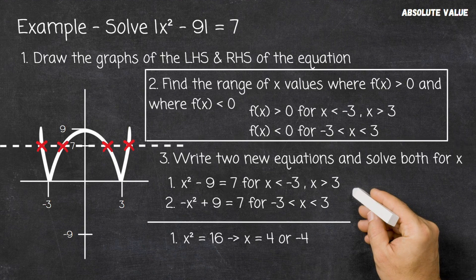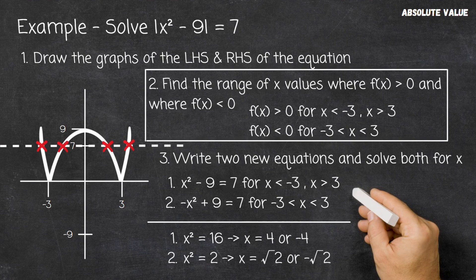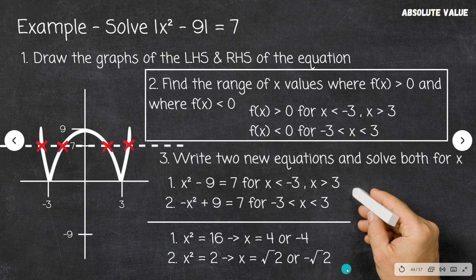Solving the first equation: x squared equals 16, giving solutions x equals 4 and x equals minus 4. Solving the second equation: subtracting 9 from both sides gives minus x squared equals minus 2. Multiplying by minus 1 gives x squared equals 2, and taking the square root gives two more solutions: x equals the square root of 2 and x equals the negative square root of 2.